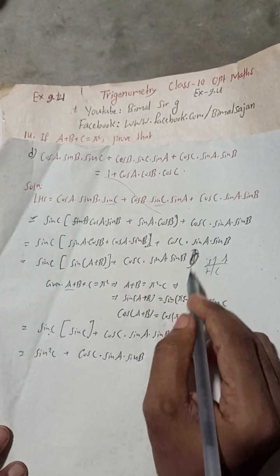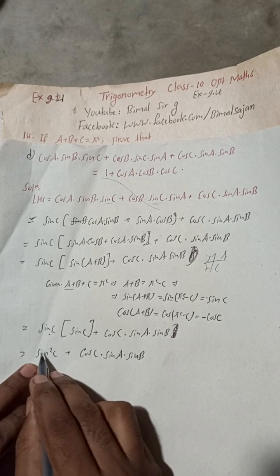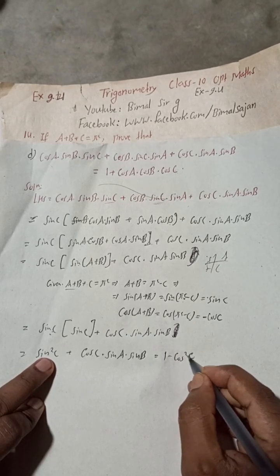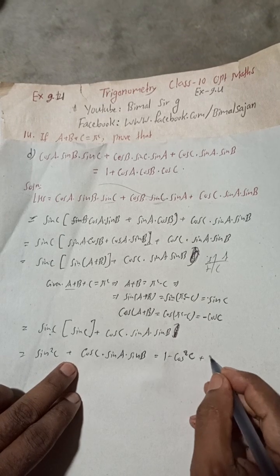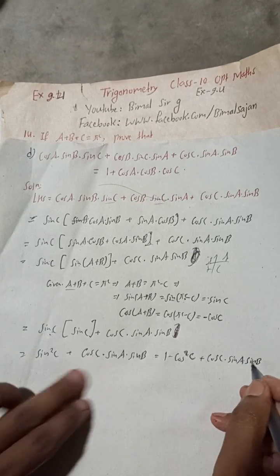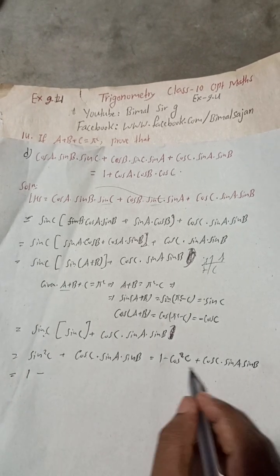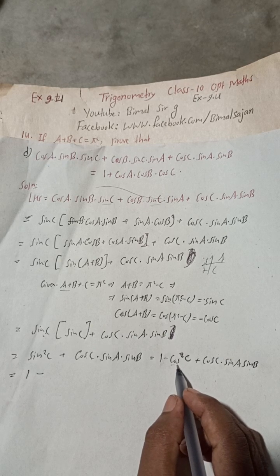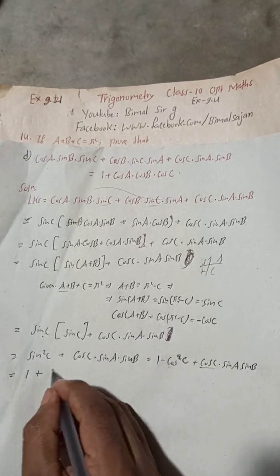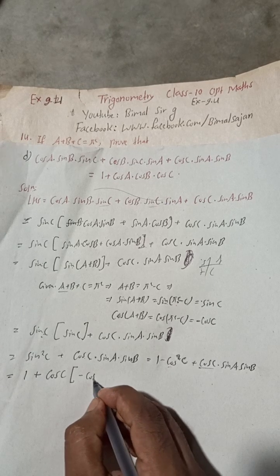Now there is only sin²C, so we change it using the identity: sin²C = 1 − cos²C. So the expression becomes 1 − cos²C plus cos C·sin A·sin B. Now I will take cos C as common from the last two terms: cos C is common, giving cos C·(−cos C + sin A·sin B).